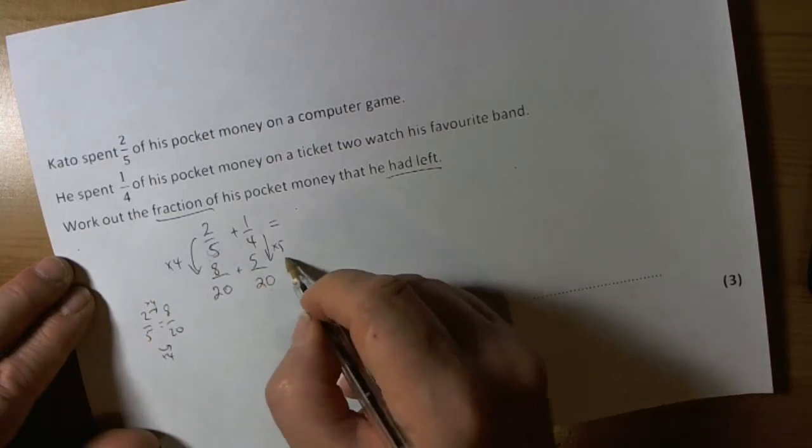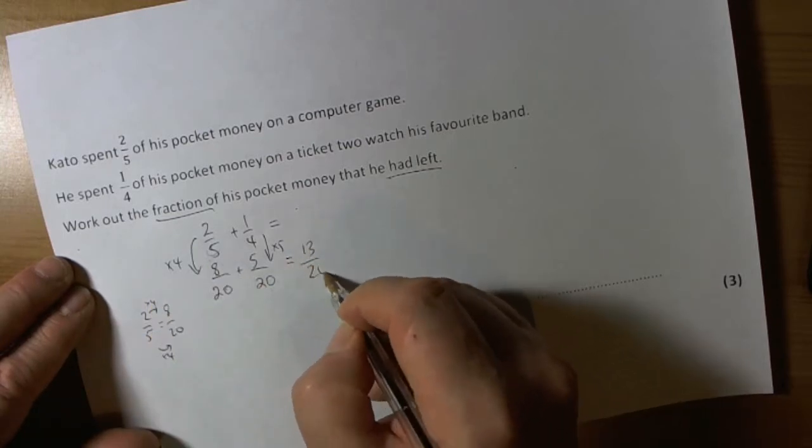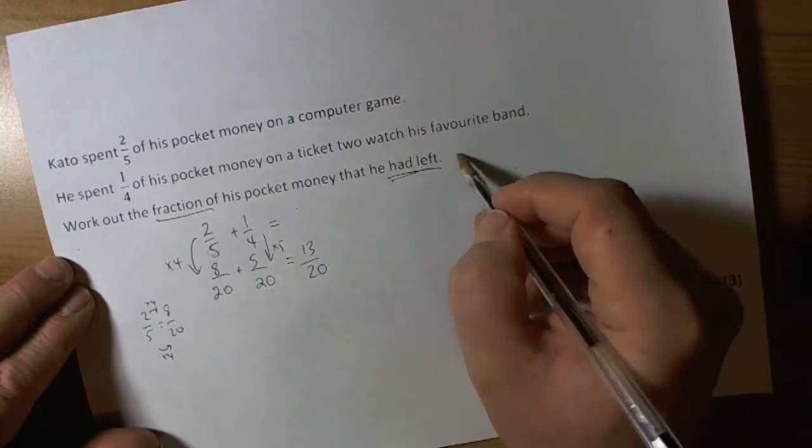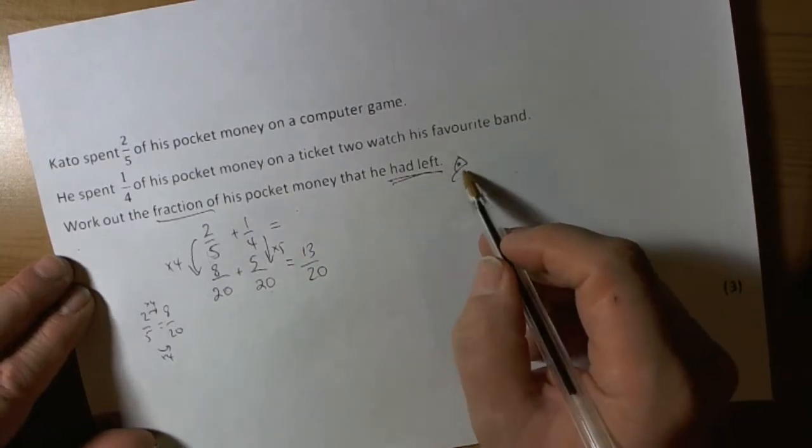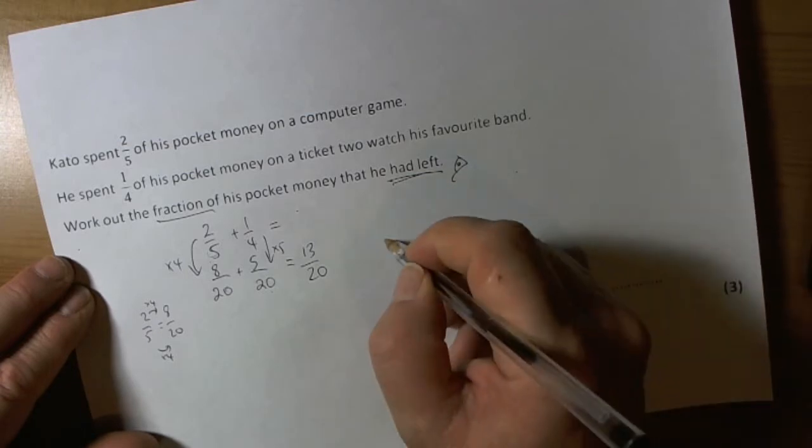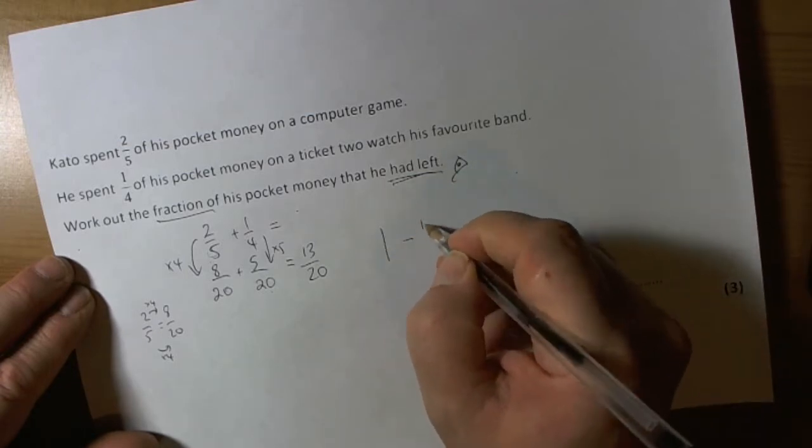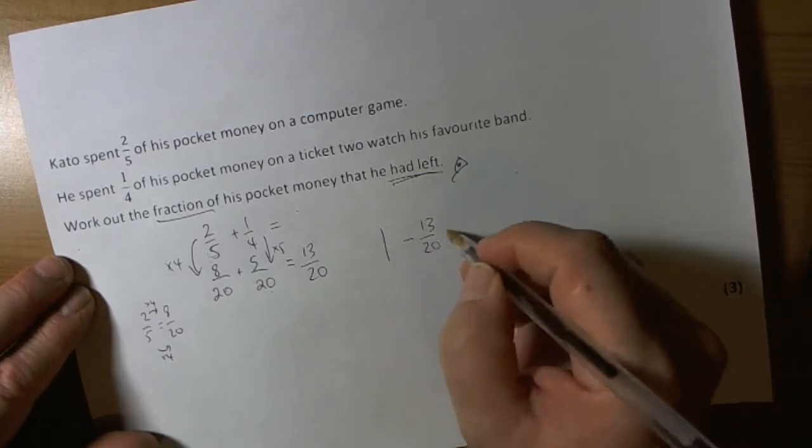So therefore we've both got these in twentieths now, so we can add those together to make thirteen-twentieths. But we've got to remember the key idea here is that we had to find out what he had left.